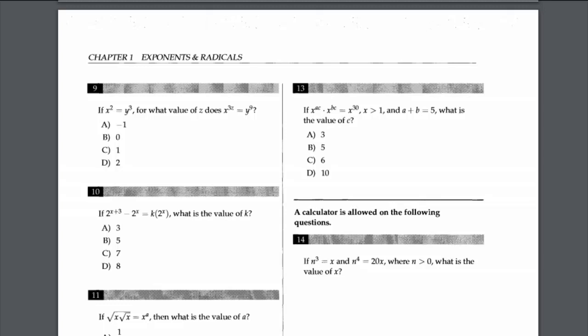Next: x to the power of ac times x to the power of bc equals x to the power of 30. When multiplying two numbers with the same base, we add the exponents, so ac + bc. Taking c as a common factor gives c times (a + b). Since a + b = 5, we have c times 5 = 30, so c equals 6.